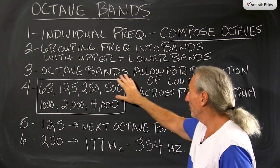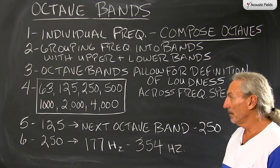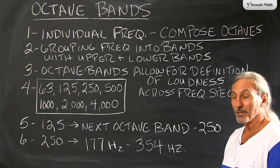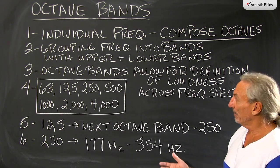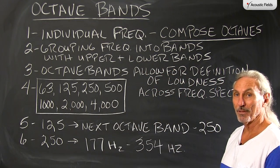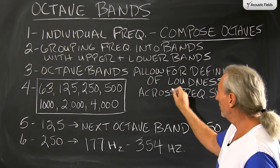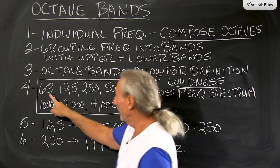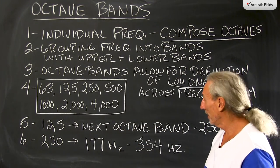What do octave bands do? They allow for a definition of loudness across the frequency spectrum. So when you look at your RTA and you're doing a third octave, a sixth octave, a twelfth octave resolution, you can see how each group reacts in terms of strength and amplitude. It's a way to measure loudness across the frequency band containing these individual frequencies.